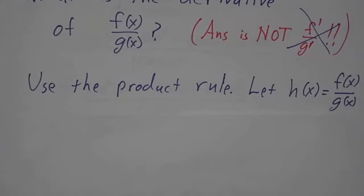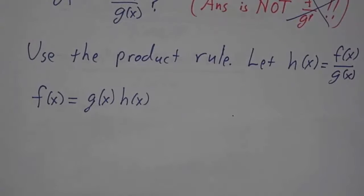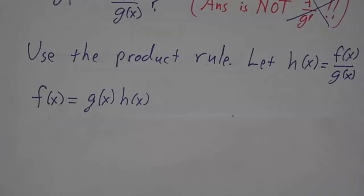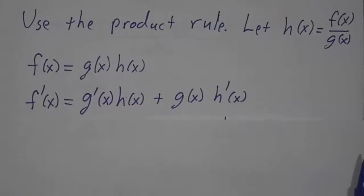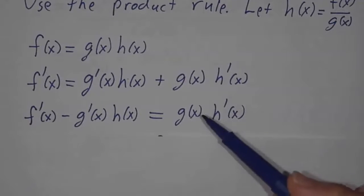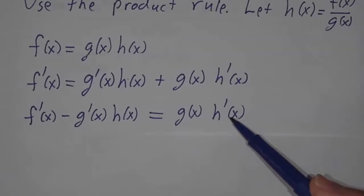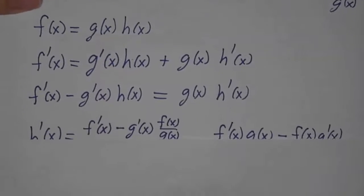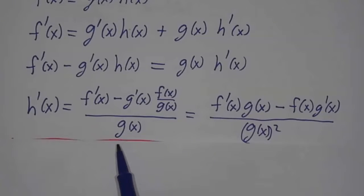Here's how we go. Let's call f over g, give it a name — we'll call it h of x. Well, that means that f of x is g of x times h of x. And now we can apply the product rule to this. This says that f prime must be g prime times h plus g times h prime. So f prime minus g prime times h must be g times h prime. And then we just divide by g, and we get the formula for h prime. So h prime is f prime minus g prime times h, divided by g.